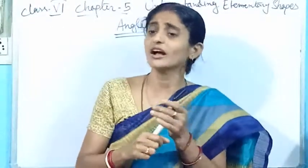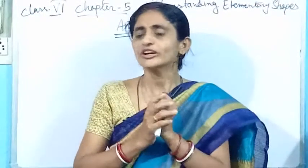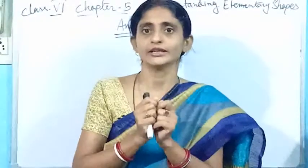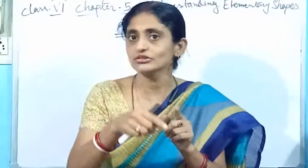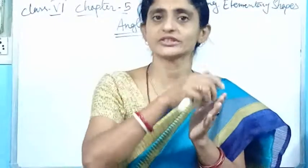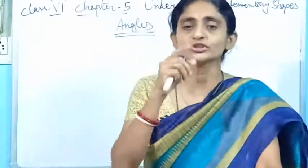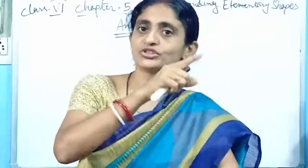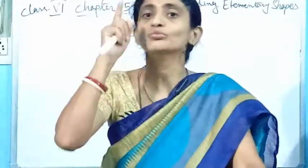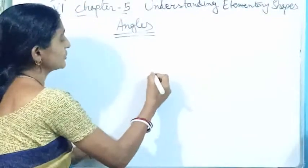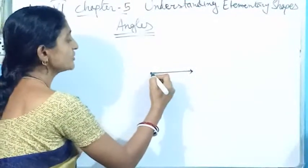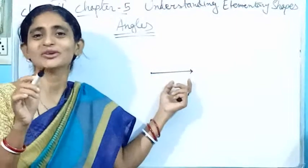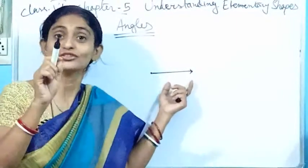Now let's come to other types of angles. Other than right angle, straight angle, or complete angle, there are other angles. When any angle is less than 90 degrees but greater than zero, that is possible. Some angles are more than 90 but less than 180, and some may be more than 180 but less than 360. Also, when a ray has not moved at all from its initial position, the measure of that angle will be zero degrees.